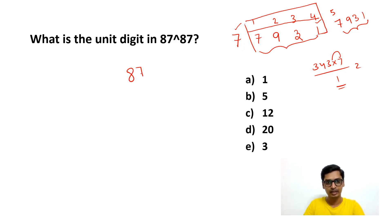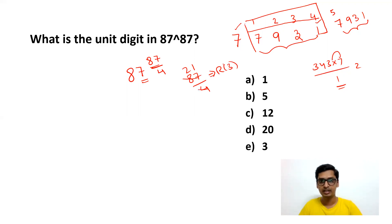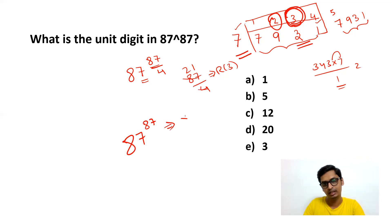You have 87 power 87. The last digit here is 7, so we apply 7 power 87. We know for every 4 times the same number repeats. At the power we have 87, so you divide this power by 4. What is 87 by 4? The remainder is 3. If the remainder is 3, you have to look at 7 power 3. If the remainder is 2, consider 7 power 2; if the remainder is 3, consider 7 power 3. What is 7 power 3? The last digit will be 3. So the answer for 87 power 87 is 3 — the last digit will be 3, so the answer is option C.